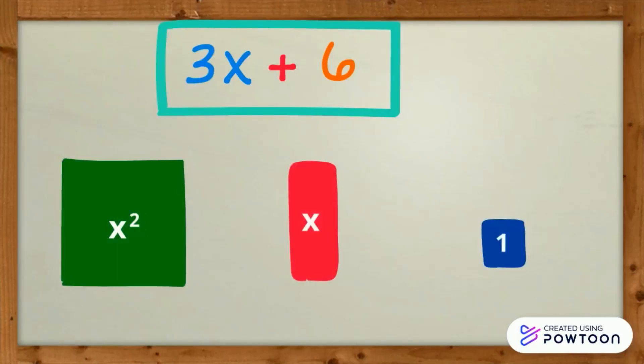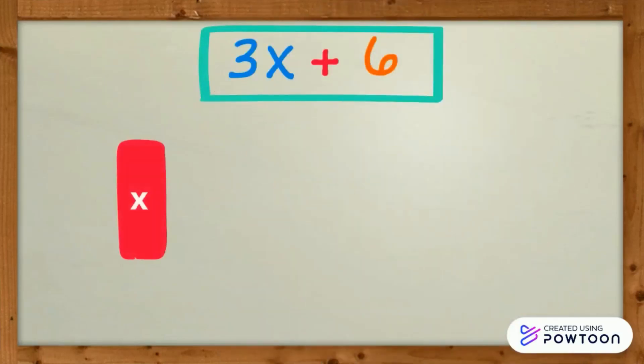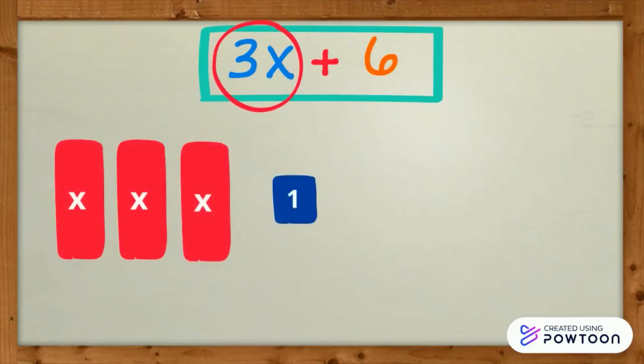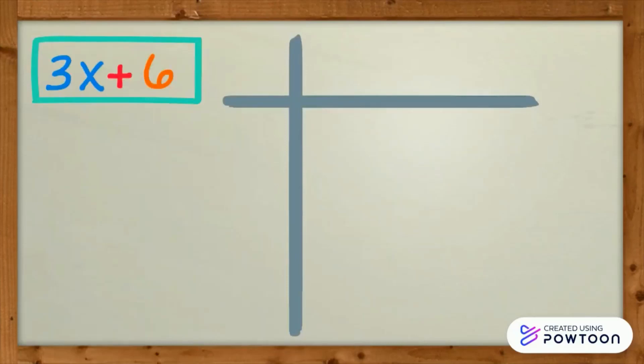In this case, we will need only x tile and a unit. To represent 3x, 3 x tiles are needed. And for the positive 6, consider 6 positive blue tiles. You can arrange or connect the tiles by the measure of the dimensions. How are we going to do this?